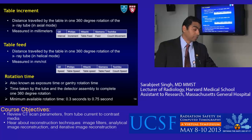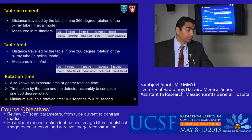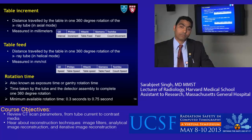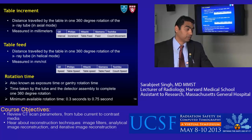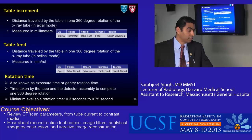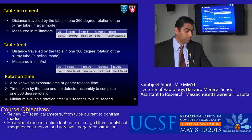Let's look at table increment, which is the distance traveled by the table in one 360-degree rotation, measured in millimeters. Different vendors call it interval, increment, table feed, feed, or couch movement. Table feed is the distance traveled by the table in one 360-degree rotation in helical mode; vendors call it speed, table speed, or table feed — for example, Hitachi calls table feed as table speed. It's important to know these terms, and a glossary is available when comparing them.